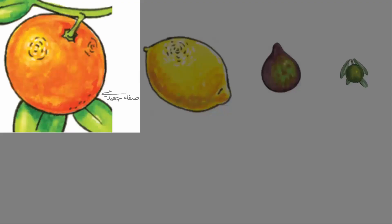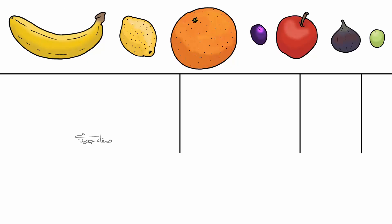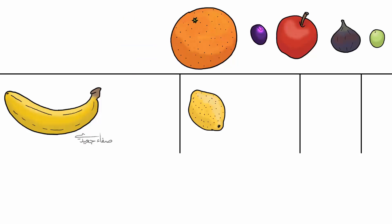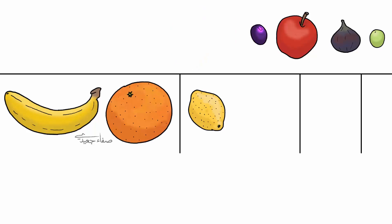The orange is very big. The lemon is big. The fig is small. The olive is very small. Banana. It's very big. Lemon. It's big. Orange. It's very big. Grape. It's very small.